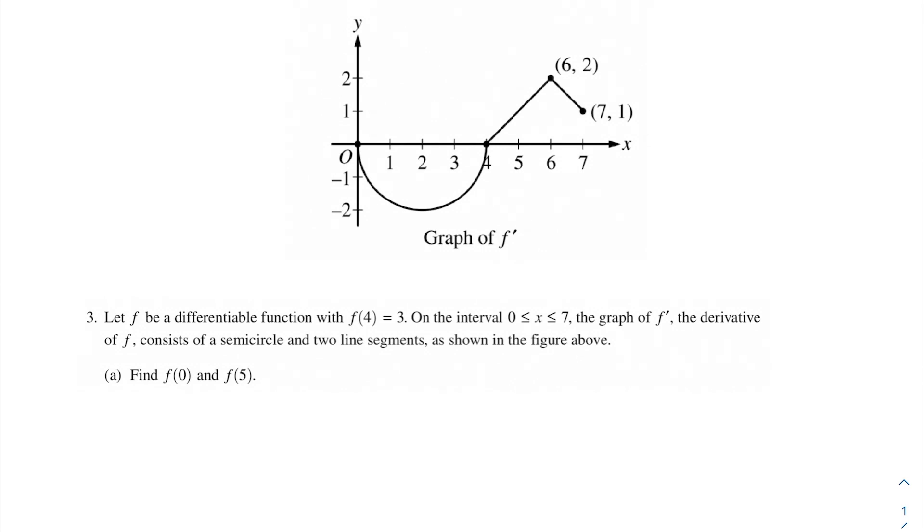In the first problem, we're being asked to find f(0) and f(5). So we can use the fact that we're given f(4) to work forwards and backwards to find f(0) and f(5). Remember that the integral of f prime would be f, so we can use the area under f prime to move back to f(0).